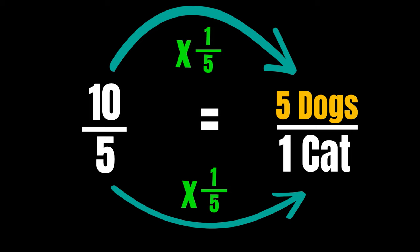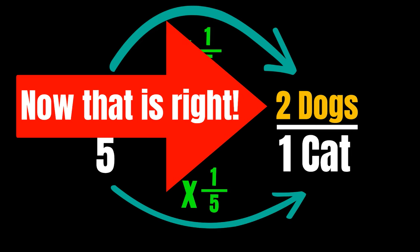Mr. Butler, that was supposed to be two dogs, because ten dogs to five cats is the same as two to one.